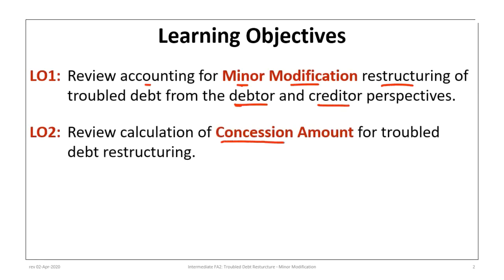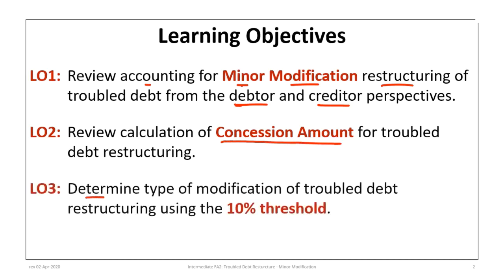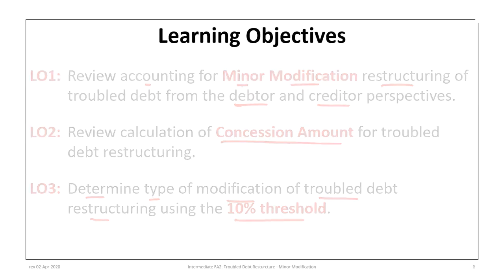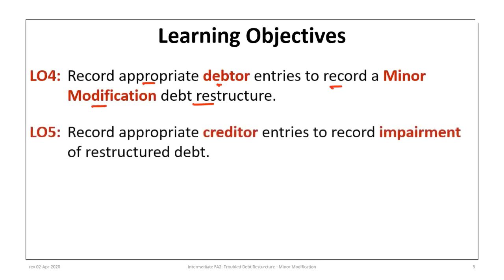The second learning objective is to review the calculation of the concession amount for troubled debt restructuring. Third, to determine the type of modification of troubled debt using the 10% threshold. Fourth, to record the appropriate debtor entries to record a minor modification debt restructure, and finally to record the appropriate creditor entries to record impairment of restructured debt.